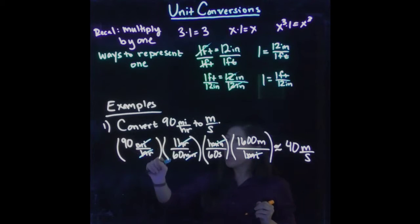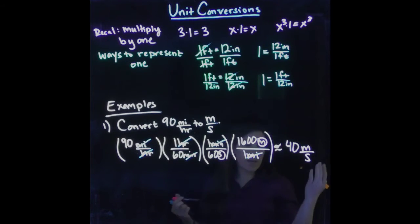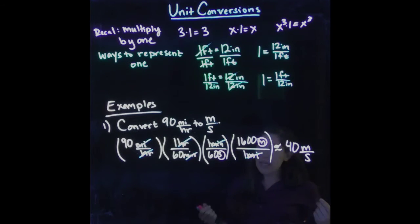So you see all of the units canceled with each other, except we were left with the meters and the seconds. And so we end up with something of units of meters per second. And so as I said, when you're thinking of unit conversions, what you should really be thinking about is the fact that you're really just taking some number, multiplying it by one multiple times, and then canceling out your units.